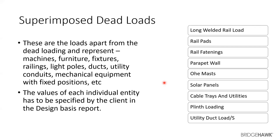Values of each individual entity have to be specified by the plant and the DBR. The different types of SIDL include long welded rail, rail pads, fastenings, parapet walls, solar panels, cable trays, lane loading, etc. This will be specified in the DBR, and for the sake of discussion, we'll take it as 45 kilonewton per meter.